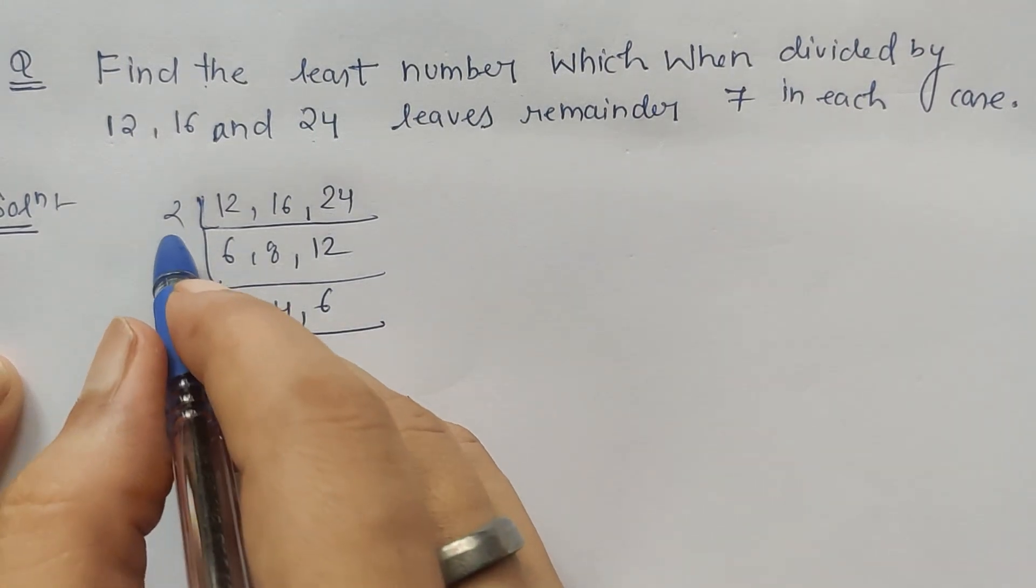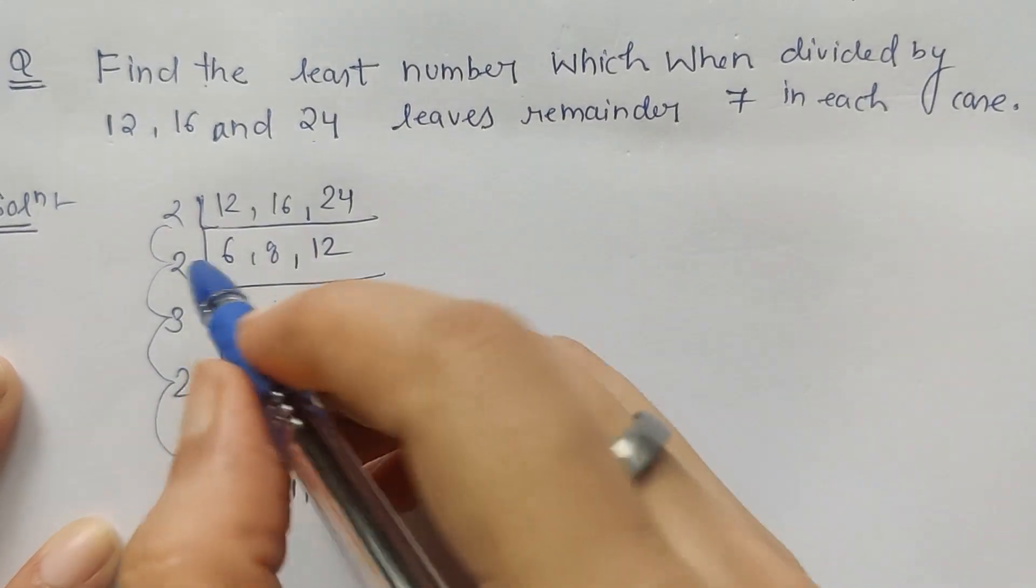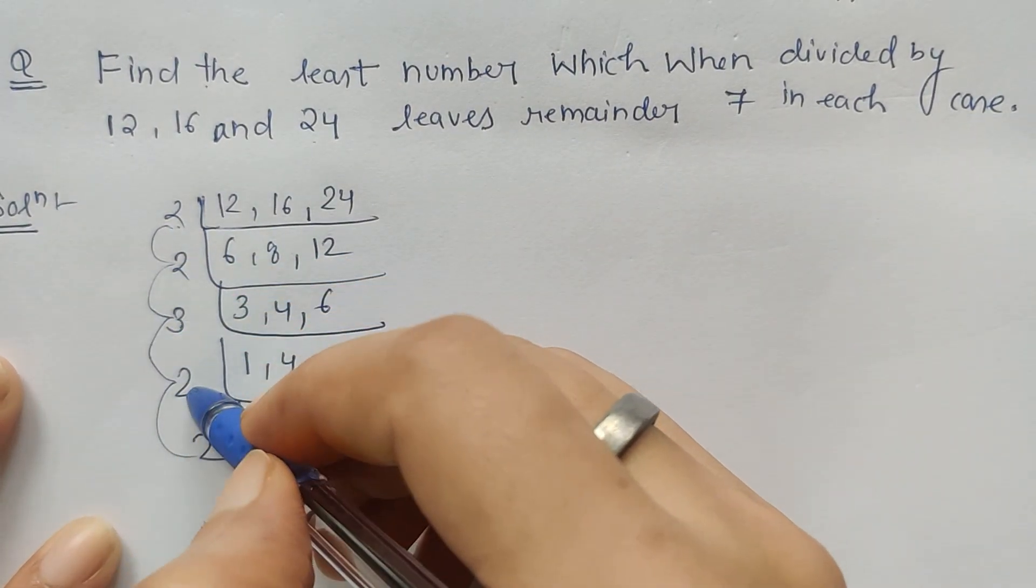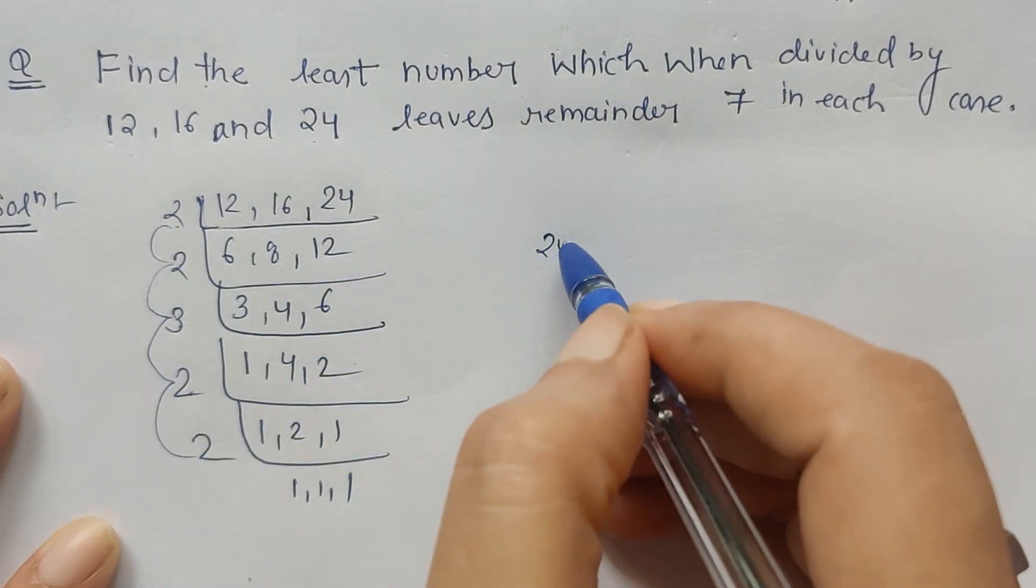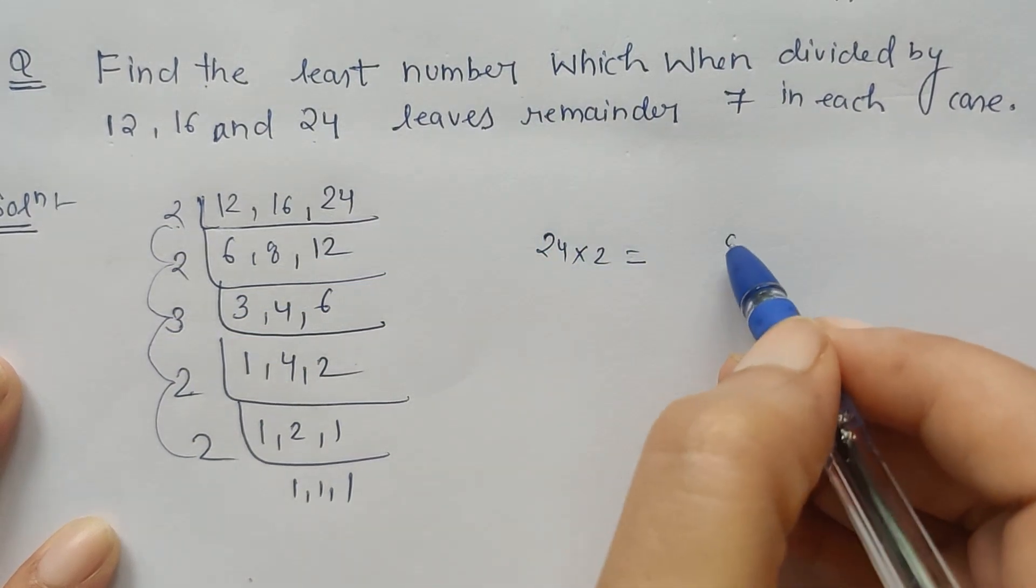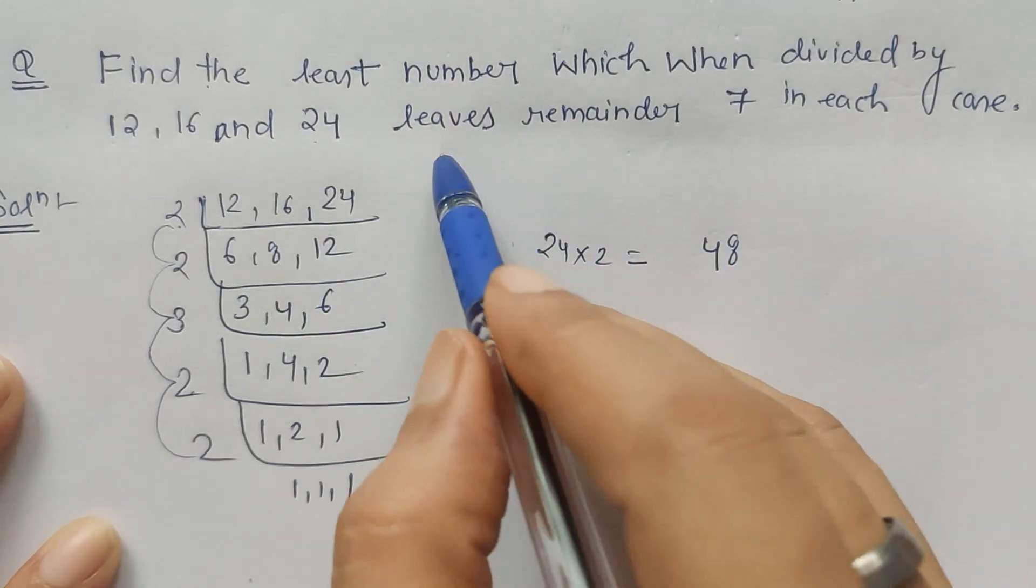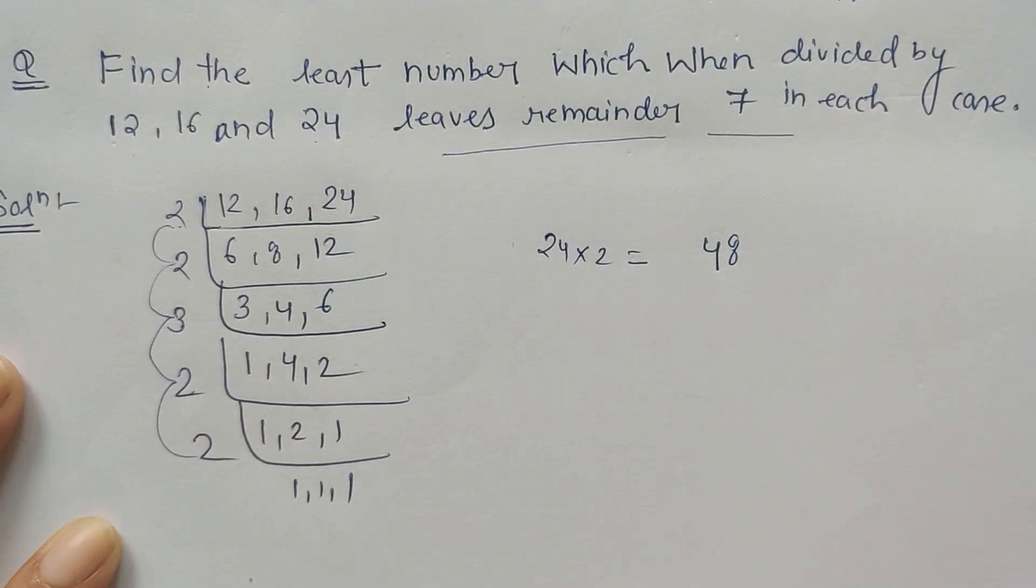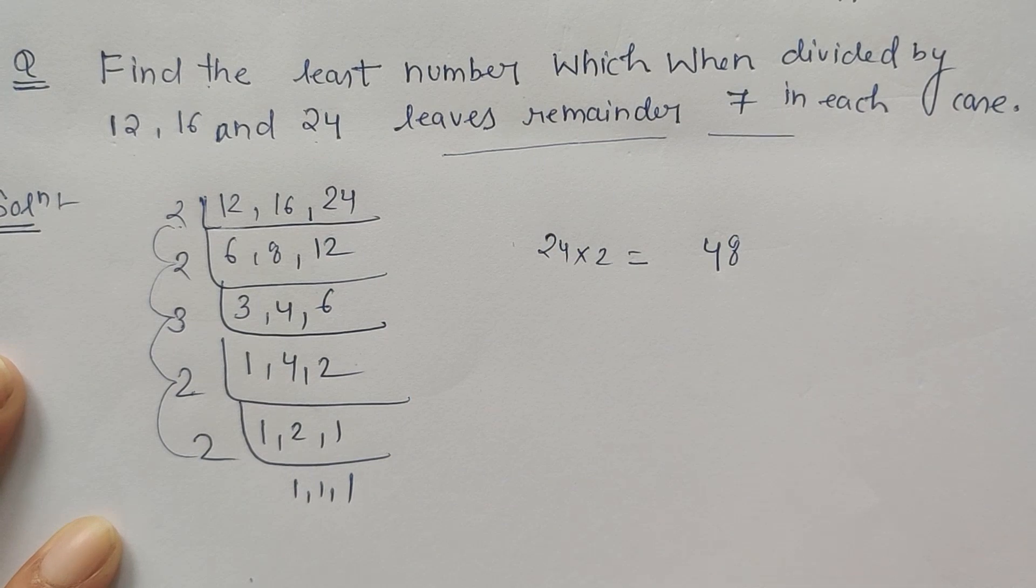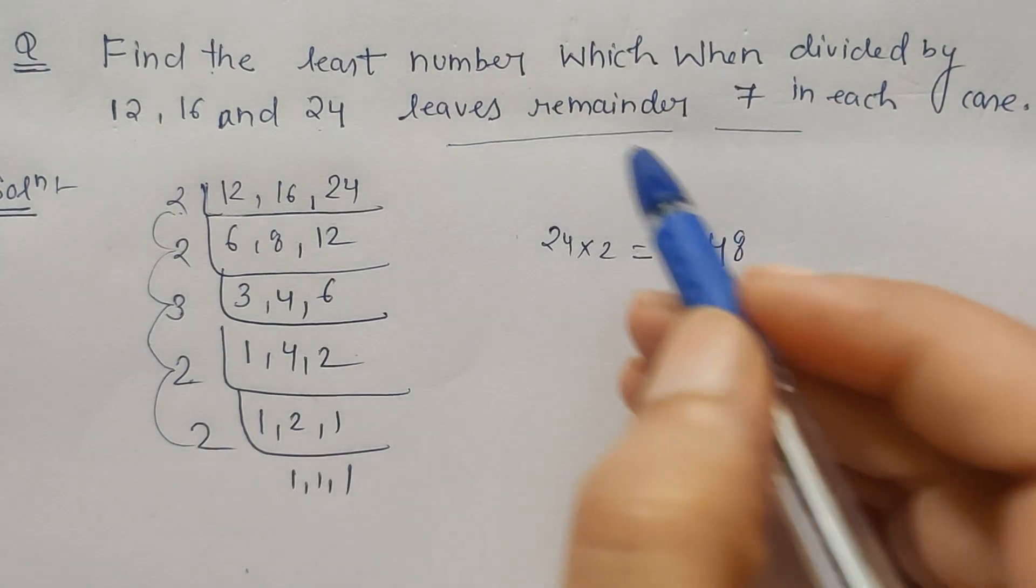Here when we multiply all these numbers, what do we get? We get 48. Now we have been given that it leaves remainder 7. What do we have to do? Next, we have to add...